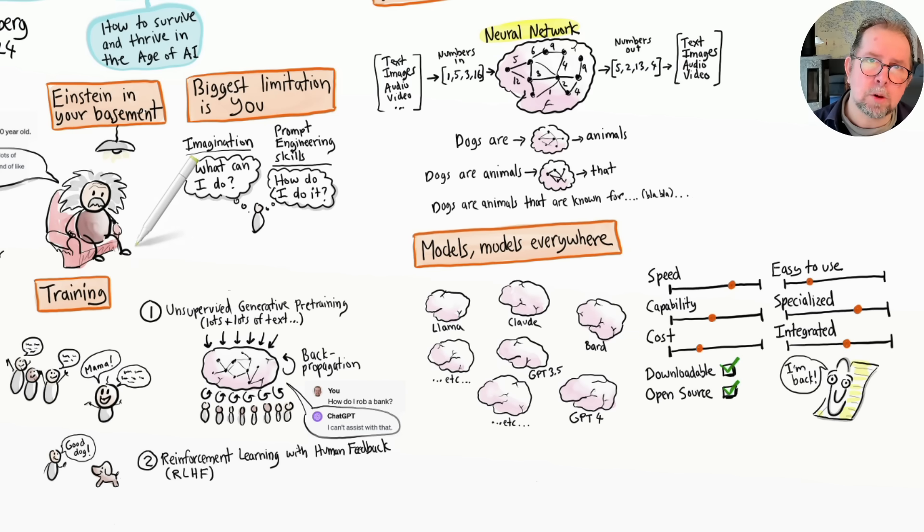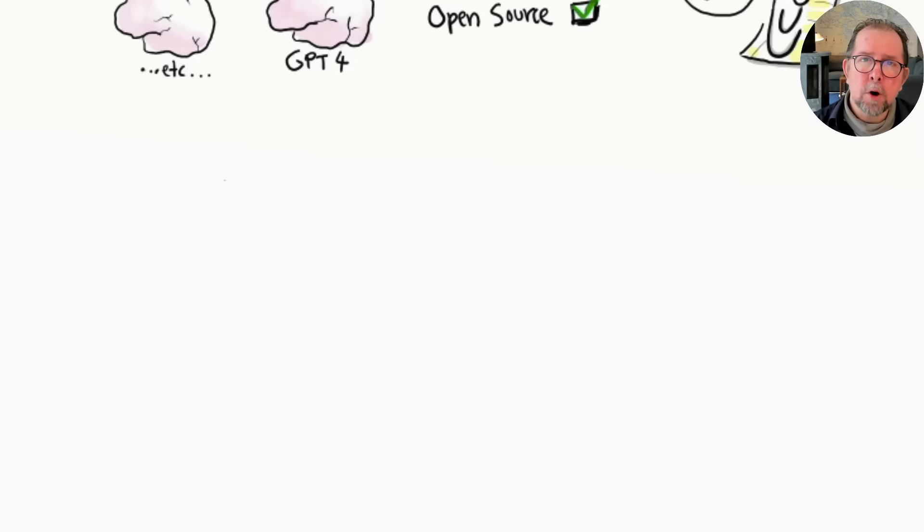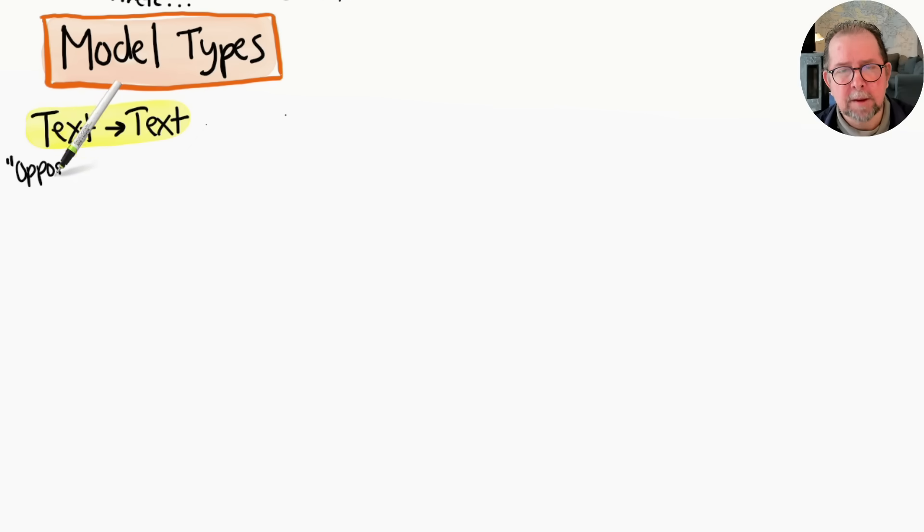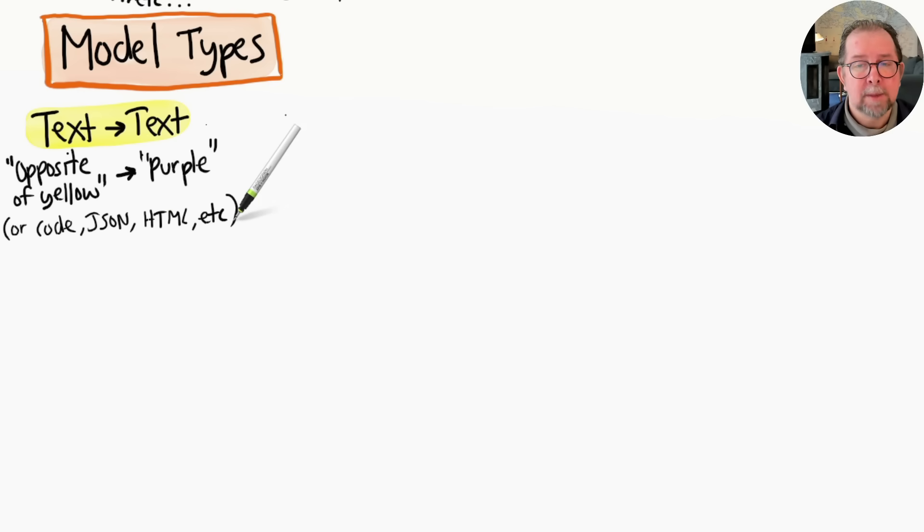Note that there are different types of generative AI models that generate different types of content. Text-to-text models like GPT-4 take text as input and generate text as output. The text can be natural language, but it can also be structured information like code, JSON, or HTML. I use this a lot myself to generate code when programming. It saves an incredible amount of time, and I also learn a lot from the code it generates.